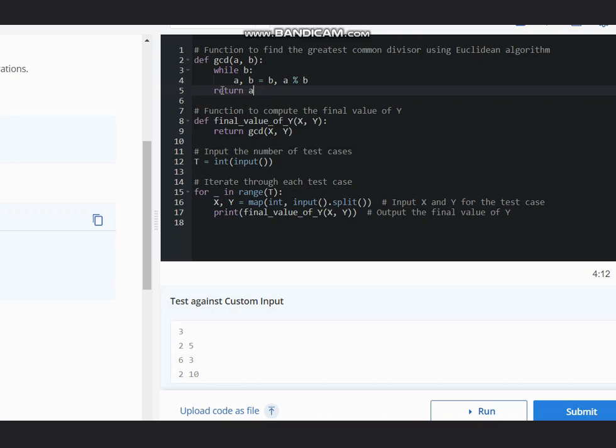Hence, it is returned, and this returns the final value of Y which we will get. So we just return GCD of X, Y, and this is the final value. As you can see, this passes for the test case. I hope you all understand this solution. Thanks for watching.